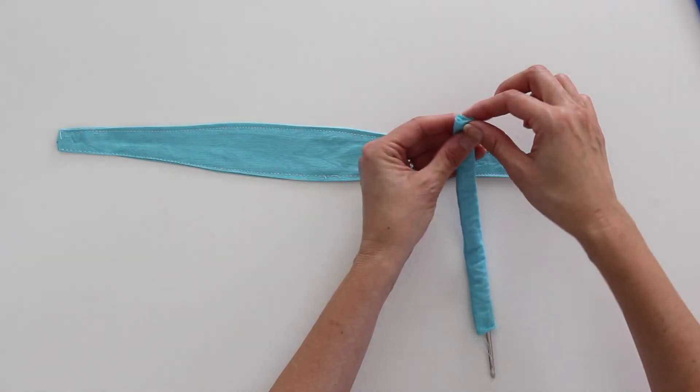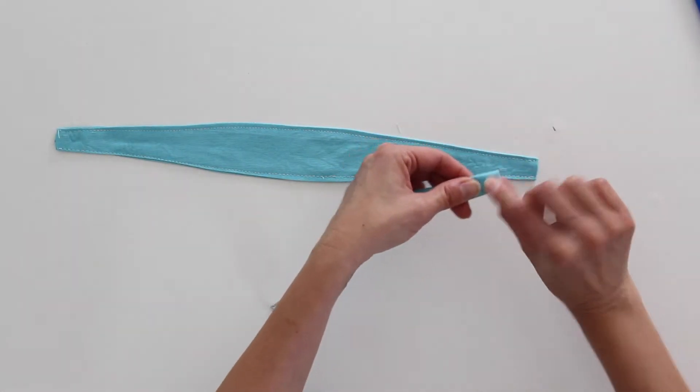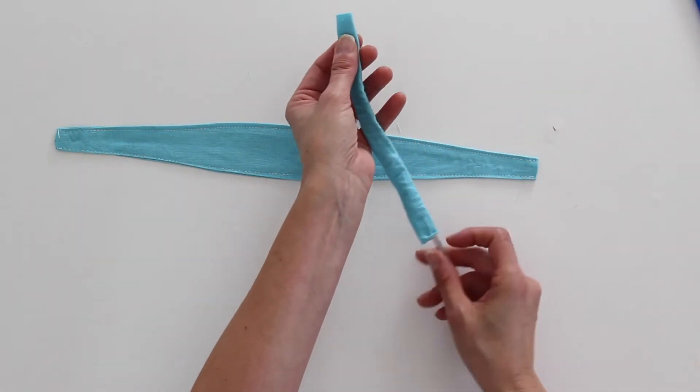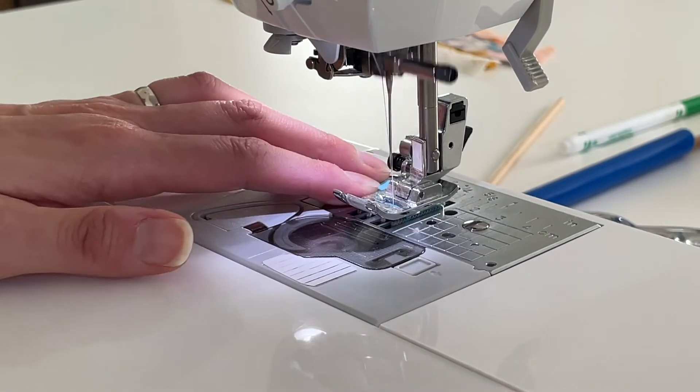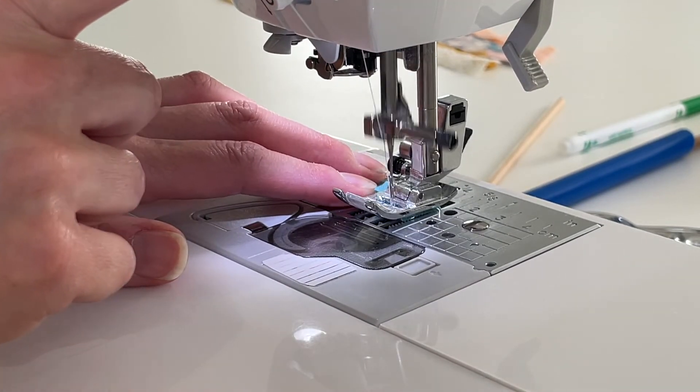So once I've got the elastic pulled into the end, I'm going to take this to the sewing machine before I've pulled it out the other end. I'm going to stitch across that so that the elastic doesn't go anywhere. And I'm going to backstitch over it too.